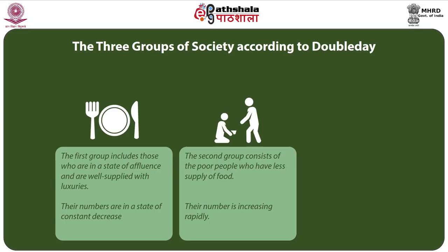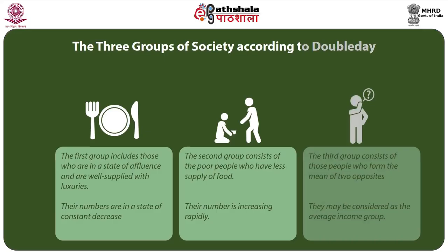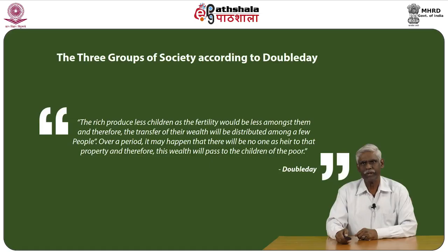The three groups of society according to Doubleday: The first group includes those in a state of affluence, well supplied with luxuries. Their numbers are in a state of constant decrease, while those engaged in mental or physical activities and living a busy life are on the increase. The second group consists of poor people who have less supply of food, and their numbers are increasing rapidly. The constant increase in population is found in the group whose people are worst supplied with food.